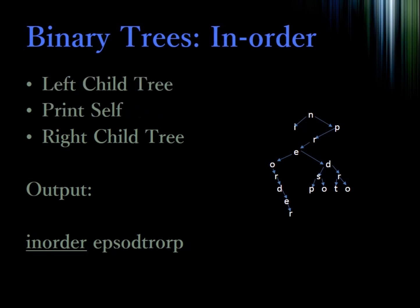The next type of traversal is called an in-order traversal. This differs from the pre-order traversal in that the first thing we do is explore the left child tree, then we print the self, and finally we explore the right child tree. The example output is shown below — hey, it contains the word in-order. That's cool.